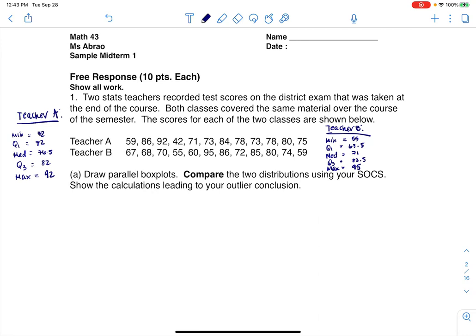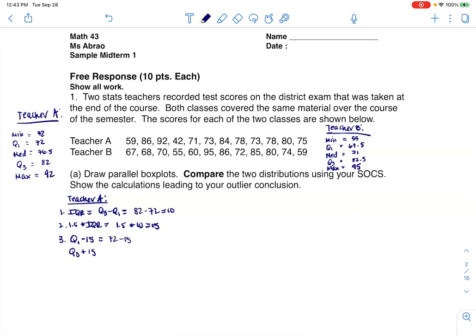I think the first thing I'm going to do is make the safety zones and see if we had any outliers. For teacher A, I need to find the IQR, which is always Q3 minus Q1. So 82 minus 72 gives me 10. I need to multiply that by 1.5, which gives me 15. Then I take 15, subtract it from Q1 and add it to Q3. This will build my safety zone. So I have 72 minus 15 and 82 plus 15, which gives me a safety zone of 57 to 97.